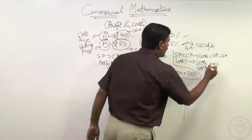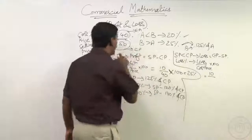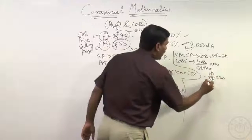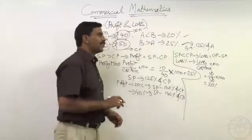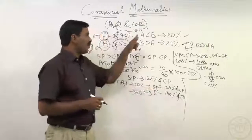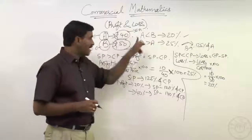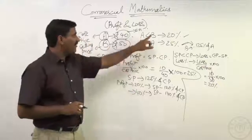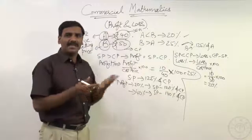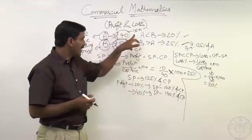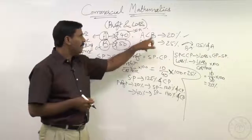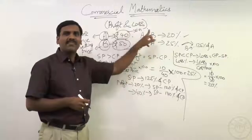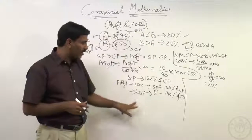How much is the loss? 10 rupees, on a cost price of 50 rupees. So 10 by 50 into 100 — that is 1 by 5 — means 20 percentage. Now, if A is 20 percentage less than B, A becomes 80 percentage of B. In the same way, if selling price is 20 percentage less than cost price — considering A as selling price and B as cost price — if there is a loss of 20 percentage, selling price becomes 80 percentage of cost price.